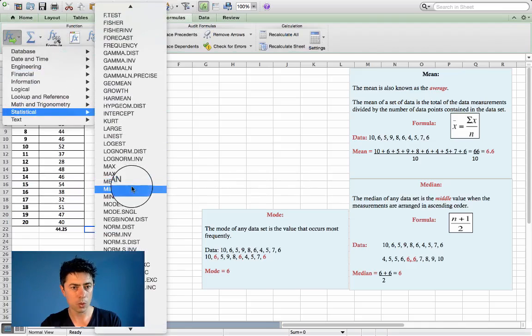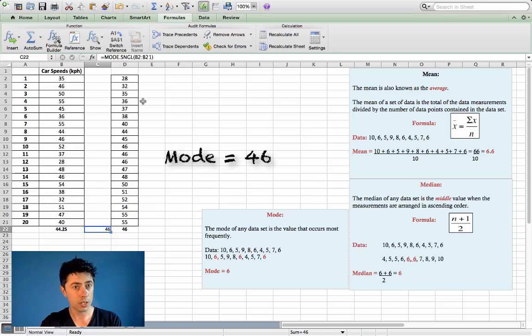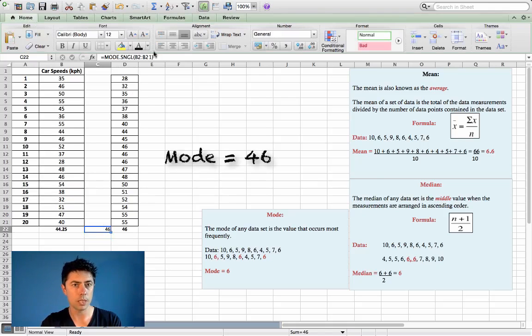And alphabetically I will go for mode single, don't go for mode multi, go for mode single, and again the cursor is nicely in our brackets. On either column, I'll go for the original data set in its original form, and 46 happens to be the number that occurs most frequently.